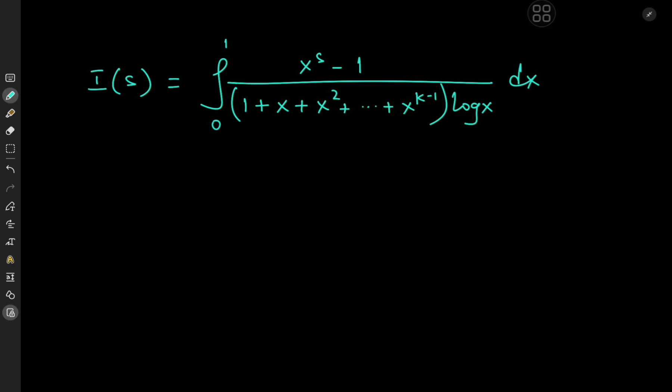Today we have a very interesting structure. It's the integral I of s, defined as the integral from 0 to 1 of x to the s minus 1 divided by 1 plus x plus x squared plus all the way up to x to the k minus 1 times the logarithm of x. And of course, you may wonder what exactly are the restrictions on the s parameter.